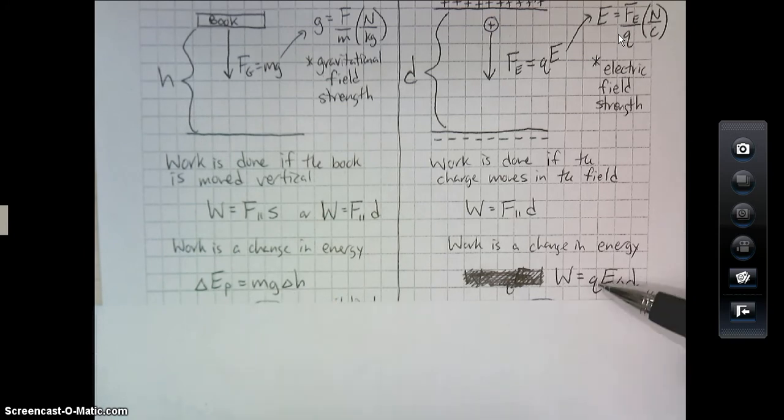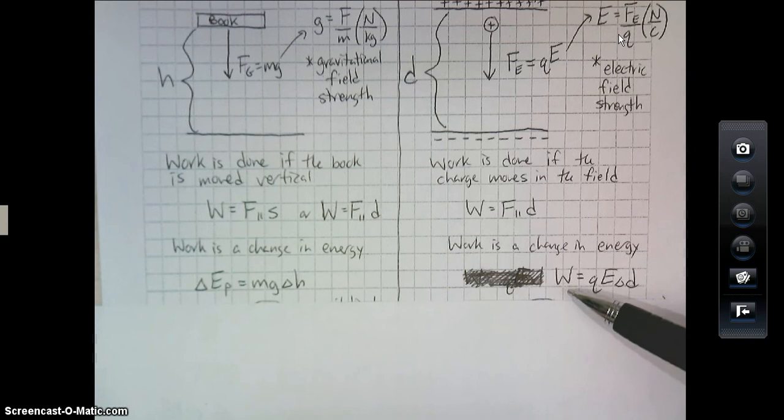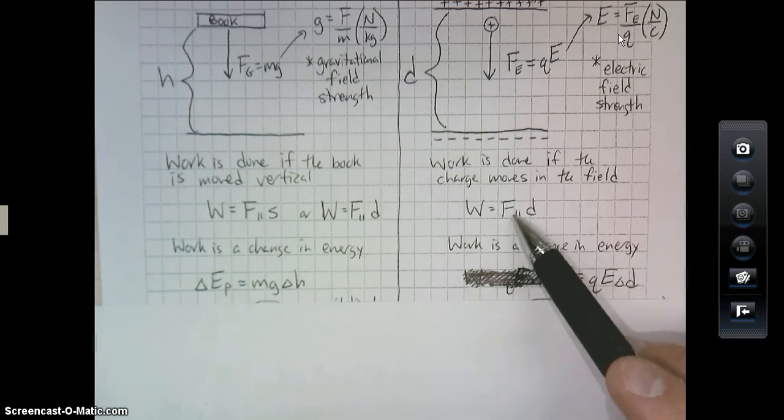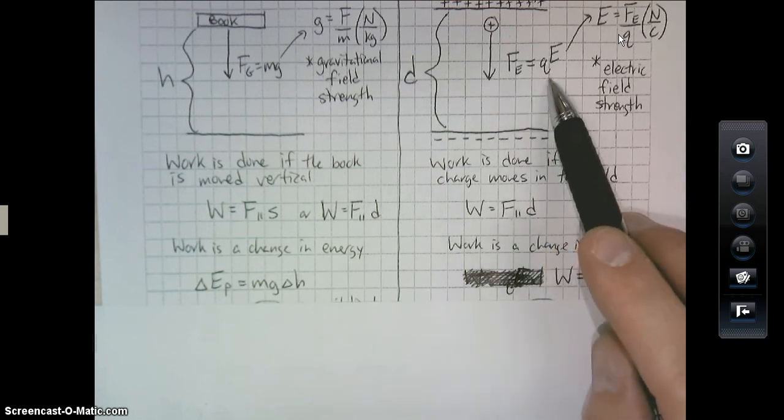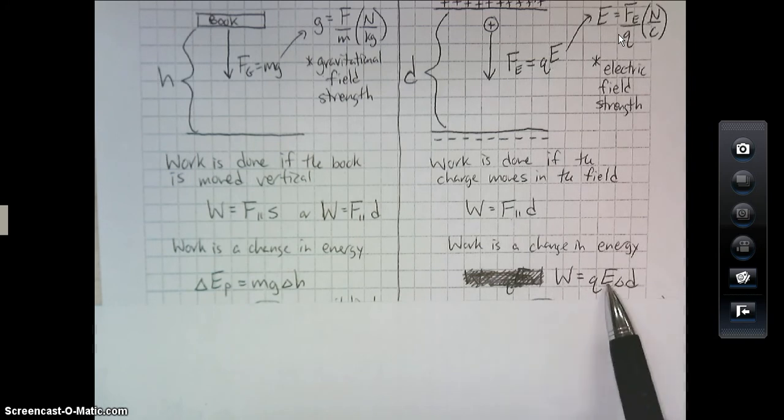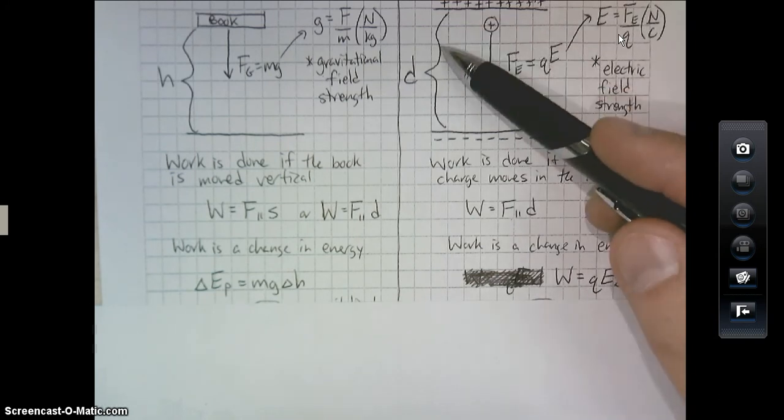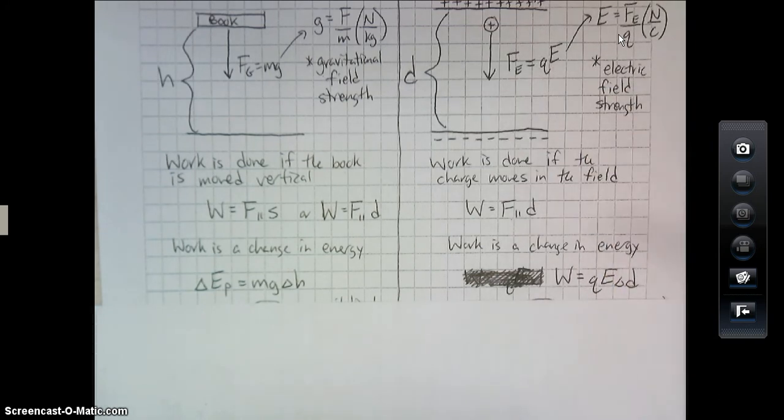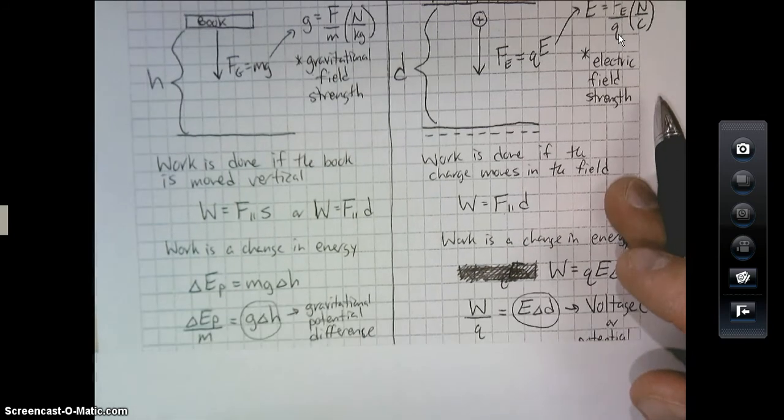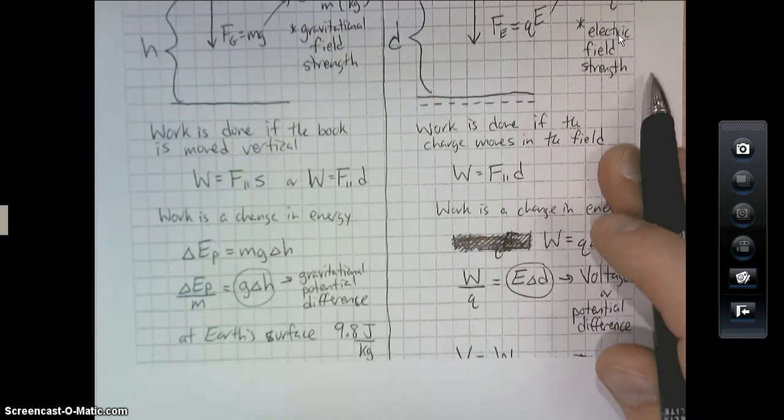In this one, work, and I've just left it as work because it tends to stay with a W for most of the time. The force parallel in this case is the electrical force, which is QE. That's why the QE is down here. And then it's the distance between those particular plates, which is delta D.